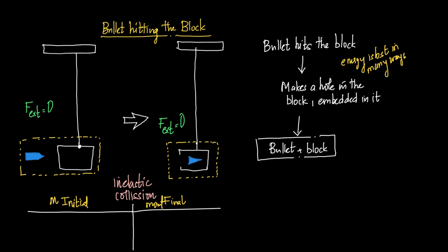When the bullet enters and gets embedded in the block, some kinetic energy is lost in various ways — sound, boring the wood, cutting the wooden fibers, and piercing into the fibers. So energy is lost in many such ways.